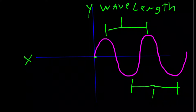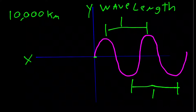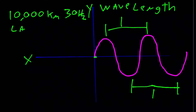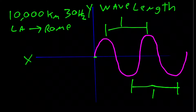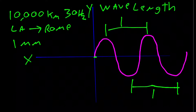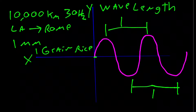Typical wavelengths in the electromagnetic spectrum range from a very long wave of 10,000 kilometers for a frequency of 30 hertz — equivalent to the distance between Los Angeles and Rome — down to about one millimeter, which is smaller than a grain of rice, corresponding to a frequency of 300 gigahertz.